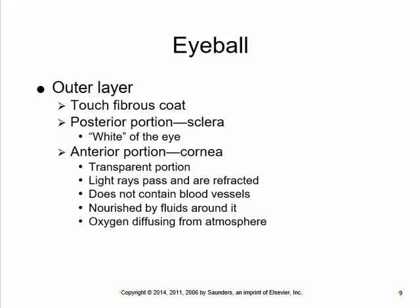The eyeball has a tough fibrous coat — dense, irregular connective tissue with lots of collagen fibers. The white of the eye is the sclera; the transparent front portion is the cornea. It is largely extracellular connective tissue, more matrix than anything else — transparent, allowing light through, and refracts like a lens. It is avascular; if there were blood vessels in the cornea, you would see them and it would affect transparency.